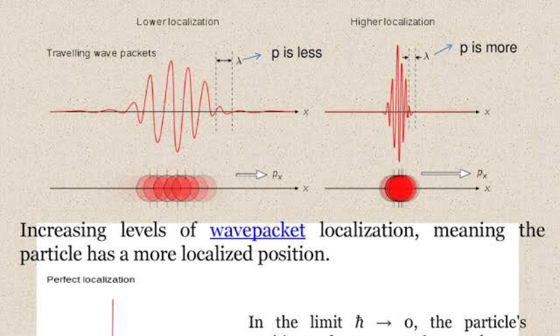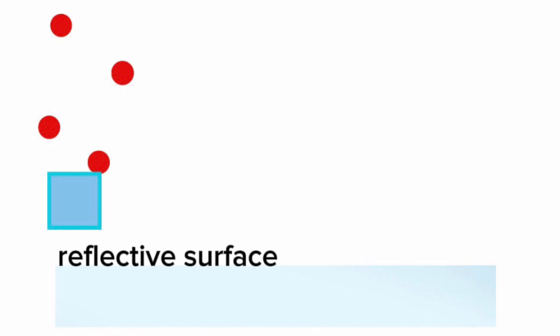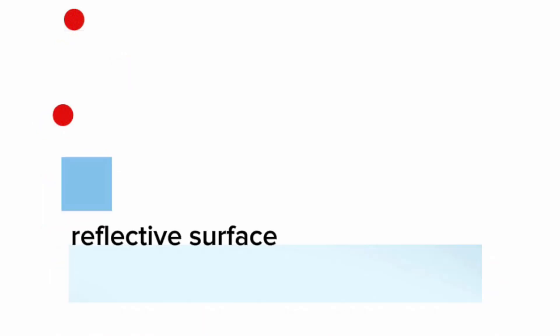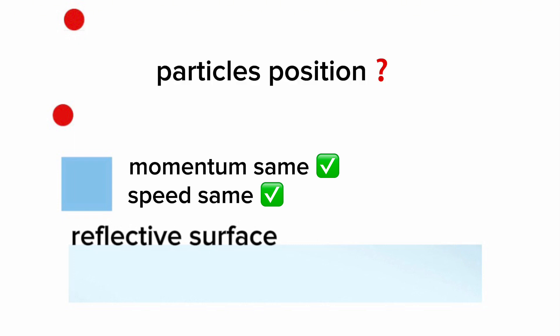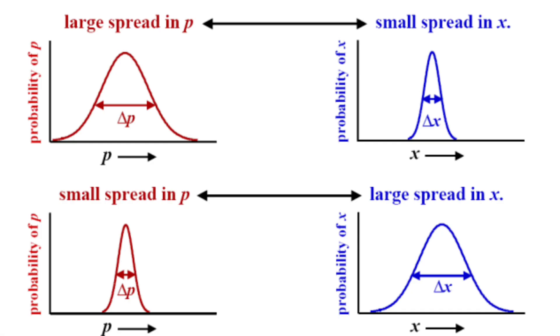No matter with how much precision you measure the momentum, the result will not be accurate. Trying another solution, you reduce the photons hitting that particle in an attempt to reduce the change in momentum — that's reasonable. But sending fewer photons, you now know the particle's position with less accuracy. As you can see, the accuracy of the position and momentum of the particle are inversely proportional: with one's increment, the other decreases.